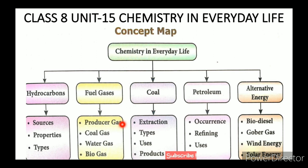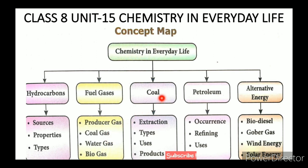To summarize the other gases: producer gas contains carbon monoxide and nitrogen; water gas contains carbon monoxide and hydrogen; coal gas contains carbon monoxide, hydrogen, and methane; biogas contains mainly methane and carbon dioxide. In the next video, we will cover the fourth topic — coal. Thank you, students.